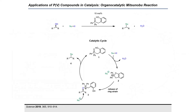The reactivity of phosphacycles was also leveraged in the development of a catalytic Mitsunobu reaction. A phosphine oxide with a pendant alcohol was developed as a catalyst, which could undergo cyclization to form a cyclic phosphonium intermediate 2. This phosphonium is a highly reactive intermediate, which reacts with an alcohol to form an acyclic phosphonium 3, resulting in release of ring strain. Subsequent attack at the alpha carbon of the substrate by a nucleophile releases product 4 and regenerates the catalyst.